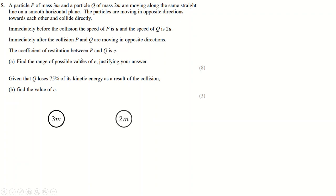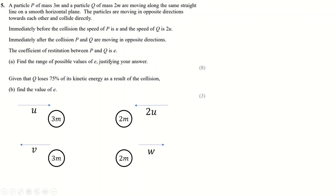Question five: two particles traveling towards each other — one at speed 2u, one at speed u — with these masses and coefficient of restitution e. Afterwards they travel in opposite directions. Since they can't pass through each other, each one must have reversed direction. We need to find the range of values of e.